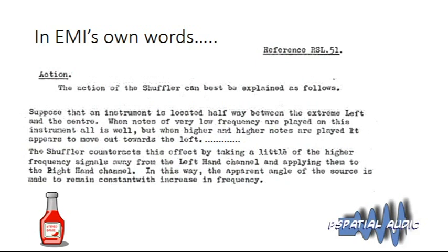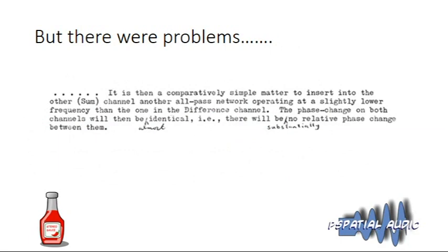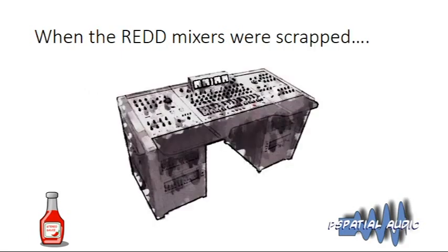It was a very ingenious system, but there were problems with the implementation. This is from the manual with handwritten annotations added — the problems were not being able to accurately enough compensate for the phase distortions caused by filtering the difference channel. The original text read 'the phase change on both channels will be identical,' but someone had annotated it 'almost identical' and 'substantially no relative phase change.'